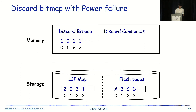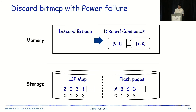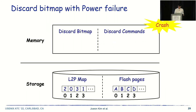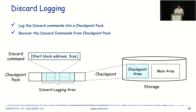Since discard bitmap and discard commands are in memory, they can be lost by power failure, and this brings about a new problem. The discard bitmap contains invalidated block information. From the discard bitmap, discard commands are created. When a crash occurs, we lose discard commands in memory. Without the discard command, flash pages are never invalidated and unnecessarily take up storage space. We call this problem storage leak. This is a unique problem that arises in IPLFS. To prevent storage leak, we propose discard logging.